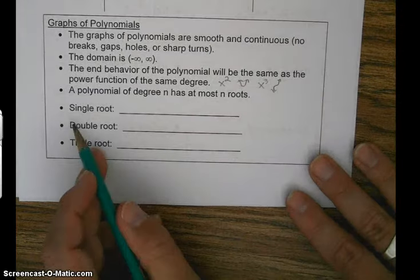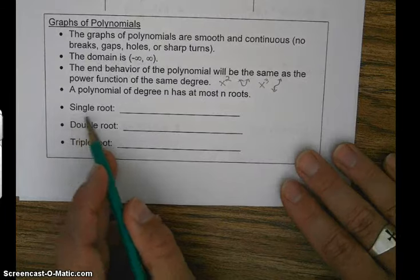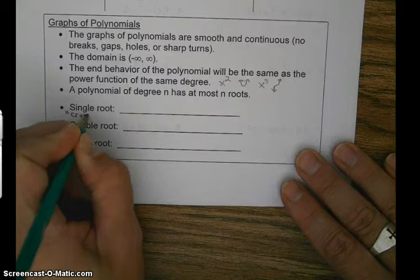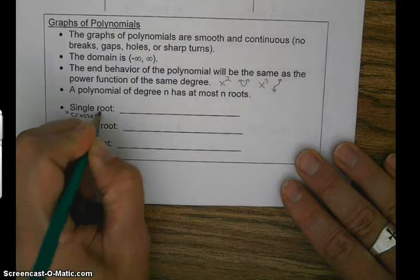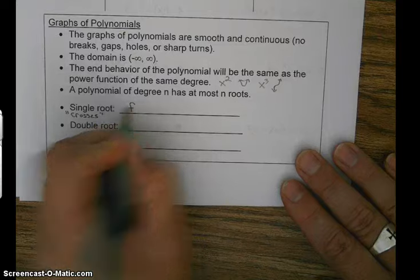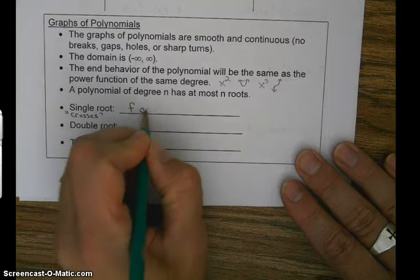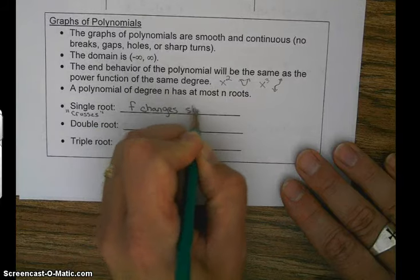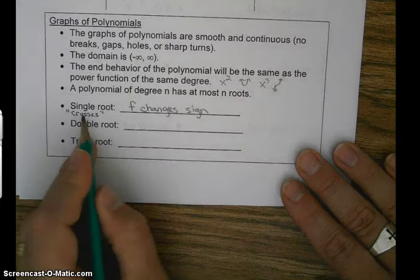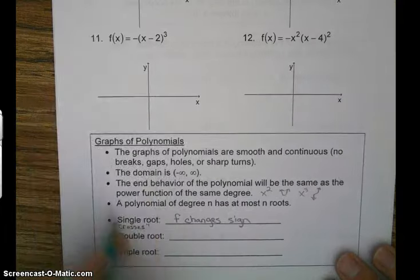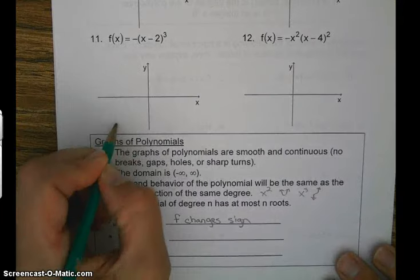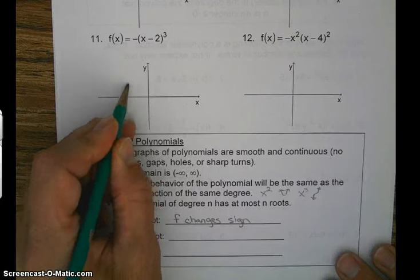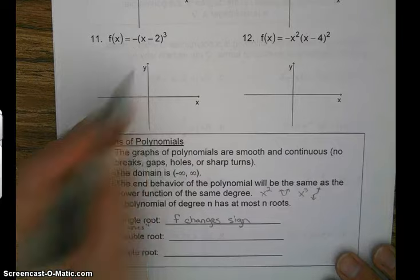So when we have a single root, remember single means it crosses. And the function changes sign. When it crosses, it changes sign. For example, as the function would be going up it's negative, and as soon as it crosses, it becomes positive. So the function changes sign.